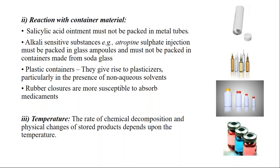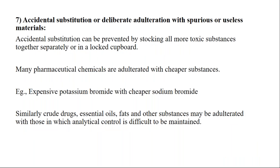Coming to the next source of impurity: accidental substitution or deliberate adulteration with spurious or useless materials. Adulteration is not just limited to grains or pulses — even with medicines there can be accidental substitution or deliberate adulteration. Deliberate means purposefully doing the adulteration. Many pharmaceutical chemicals are adulterated with cheaper substances. For example, potassium bromide is a very expensive chemical and can be mixed with cheaper sodium bromide. Such adulterations are very difficult to analyze, control, or maintain.